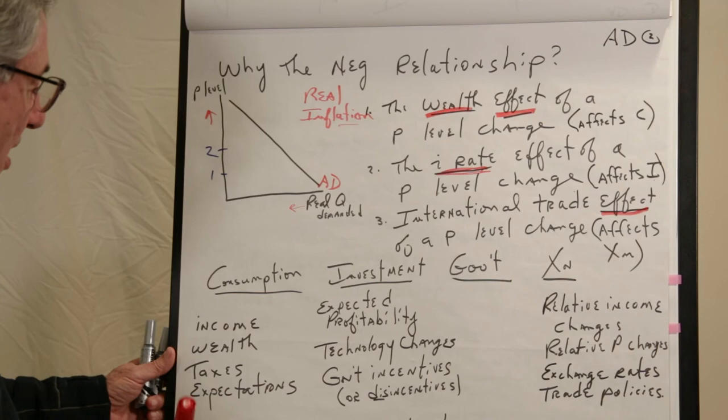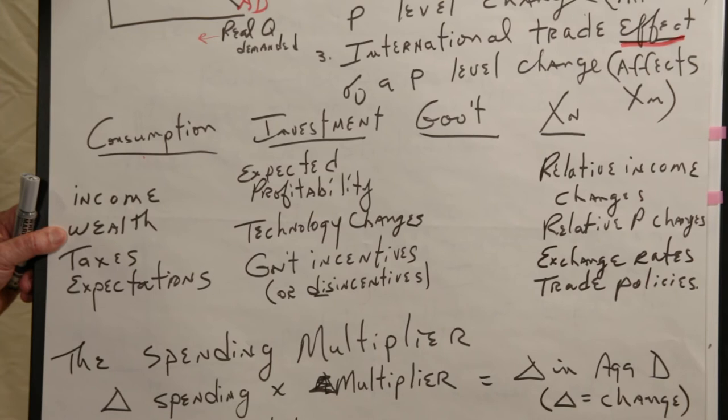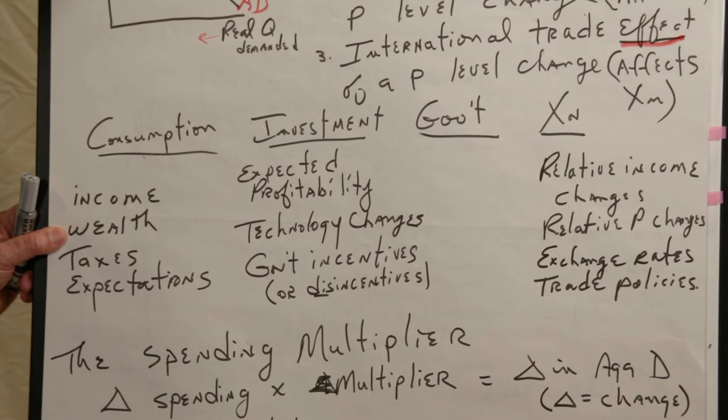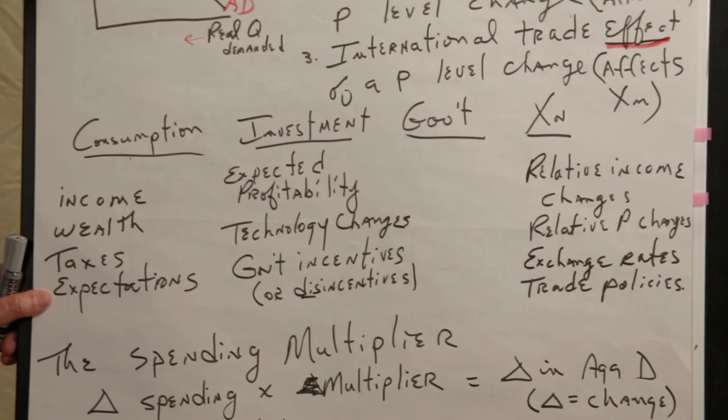So some of the things that would cause changes, shifts in aggregate demand on the consumption side: if incomes of consumers change, if the wealth of consumers change, that will affect their consumption decisions, how much they want to consume each month. If the taxes go up, that leaves less spending power. If taxes go down...